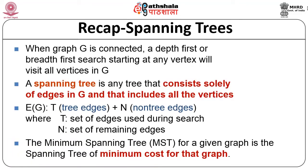Before we go further, let us just do a recap of what spanning trees are. When you have a graph that is connected, when we visit all the nodes of the graph, it is called a traversal. We have a depth first traversal where you start at any vertex and cover all the vertices of the graph. A spanning tree, on the other hand, is a tree — not a graph. We are taking a graph and producing a spanning tree as an output. It is any tree that consists only of the edges in G and it has to include all the vertices that are there in the graph.